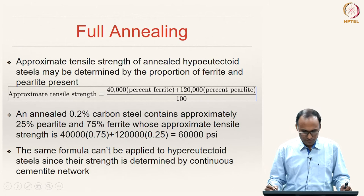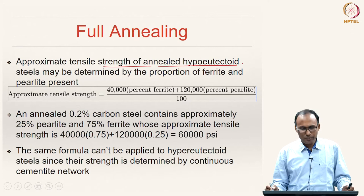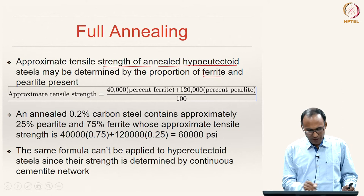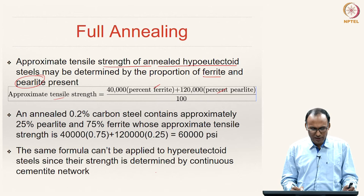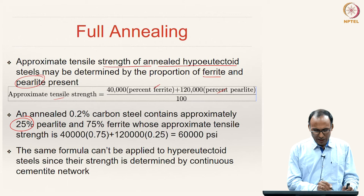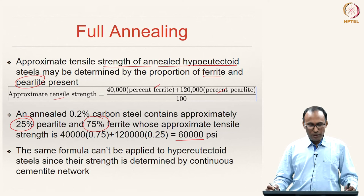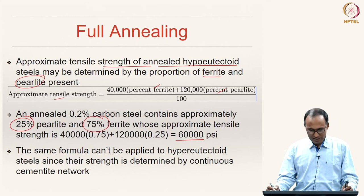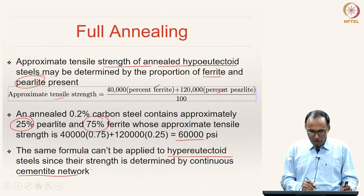The approximate tensile strength of an annealed hypo-eutectoid steel can be determined by knowing the proportion of ferrite and pearlite: tensile strength equals (40,000 × percentage of ferrite) plus (120,000 × percentage of pearlite), divided by 100. For 0.2% carbon steel with about 25% pearlite and 75% ferrite, the approximate tensile strength is about 60,000 psi. However, the same formula cannot be applied for hyper-eutectoid steels because their strength is determined by the continuous cementite network.